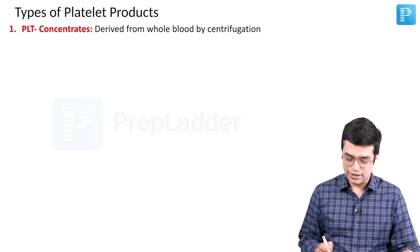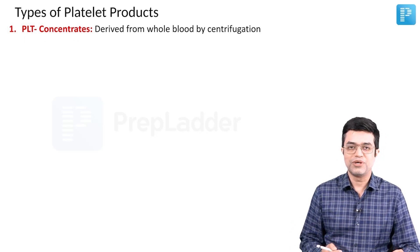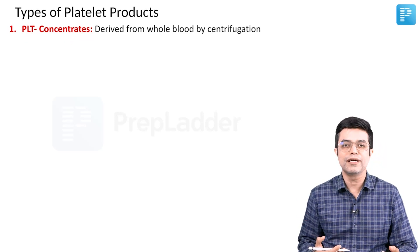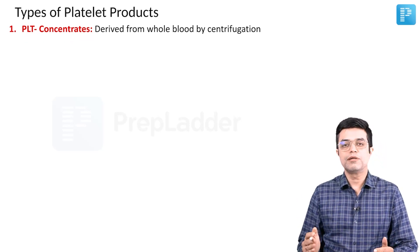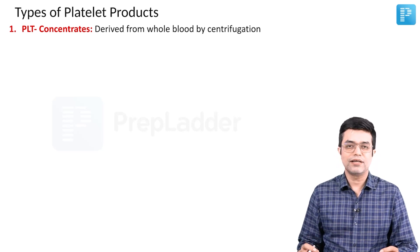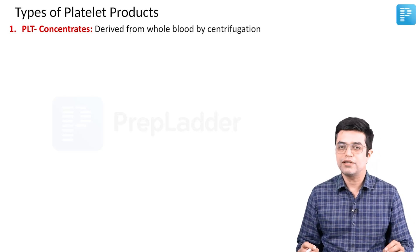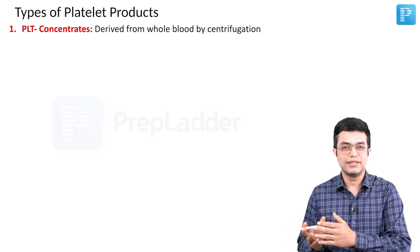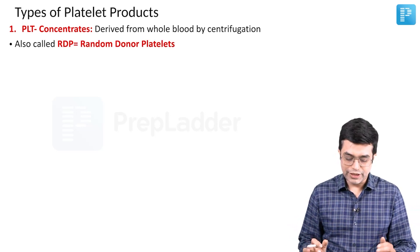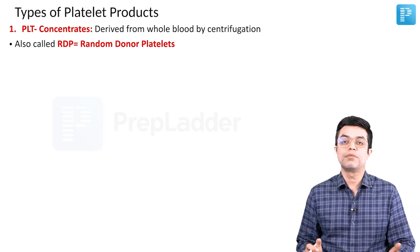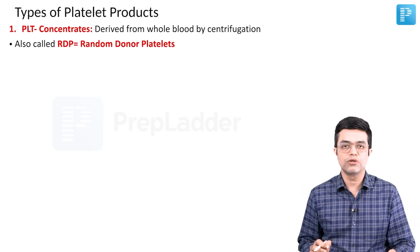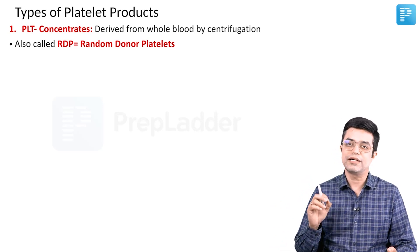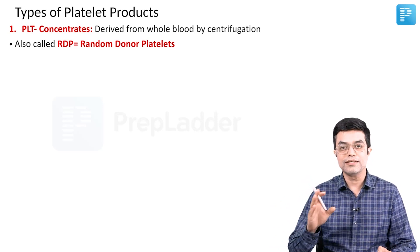The first and most common type is platelet concentrates — when you fill the form, you write it as a certain number of units of PC required. PC stands for platelet concentrates. They are derived from whole blood by centrifugation and are the most commonly used product for platelet transfusion. They are also called RDP, that is Random Donor Platelet — pooled blood from which you take out platelet concentrate after centrifugation. RDP and platelet concentrate are the same thing.